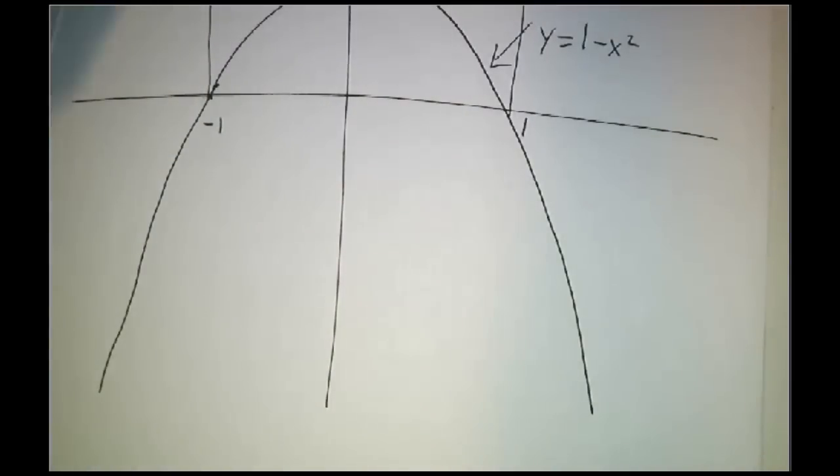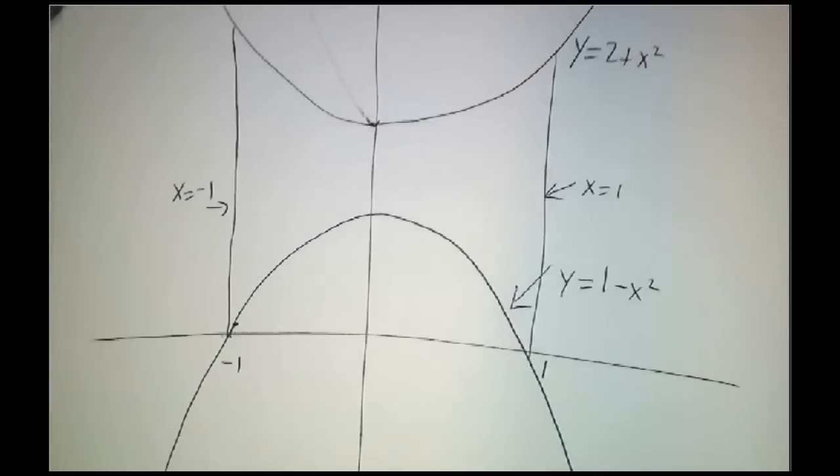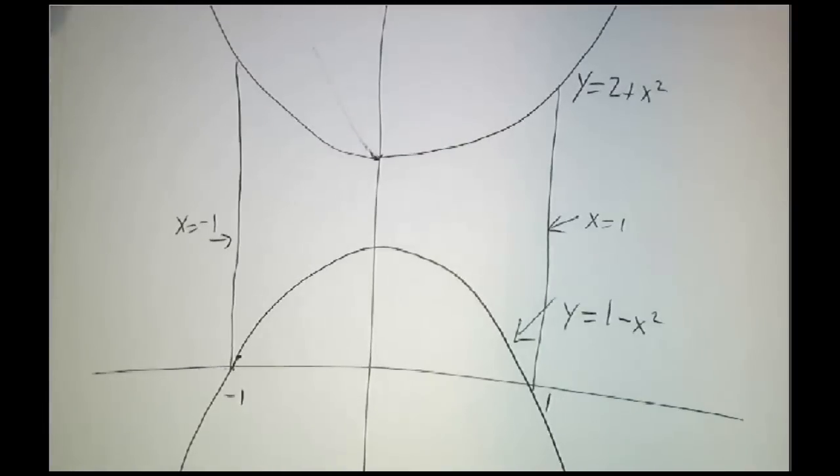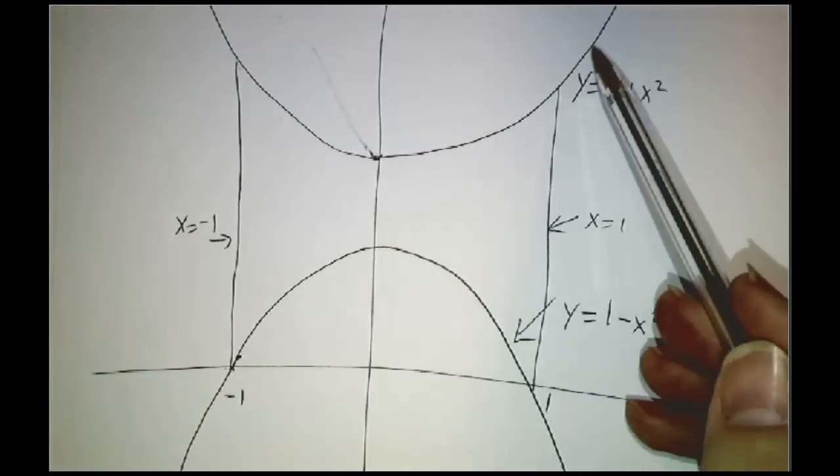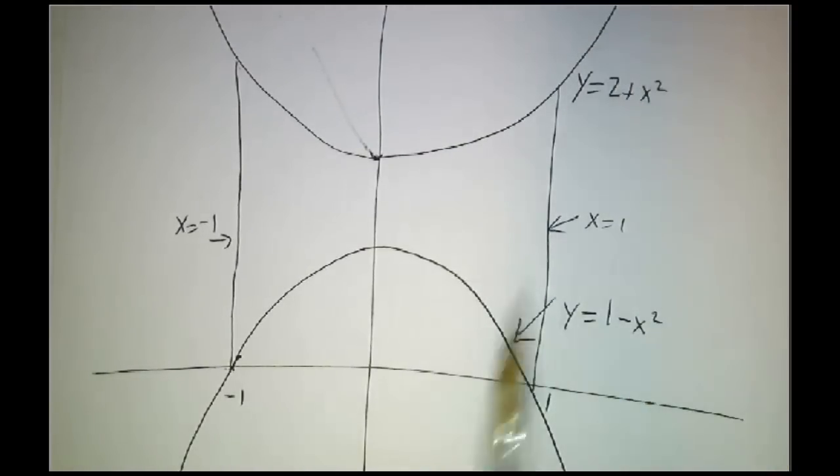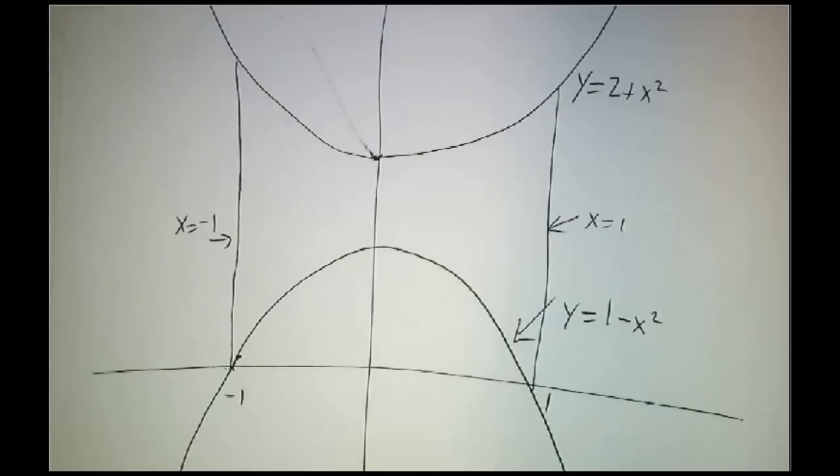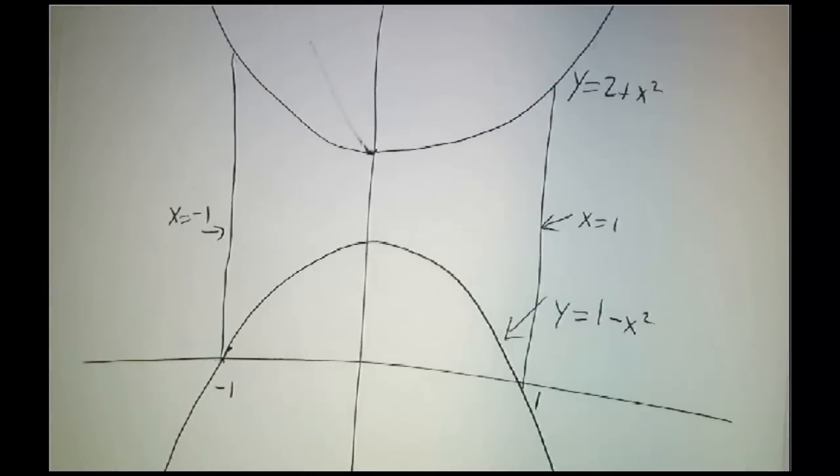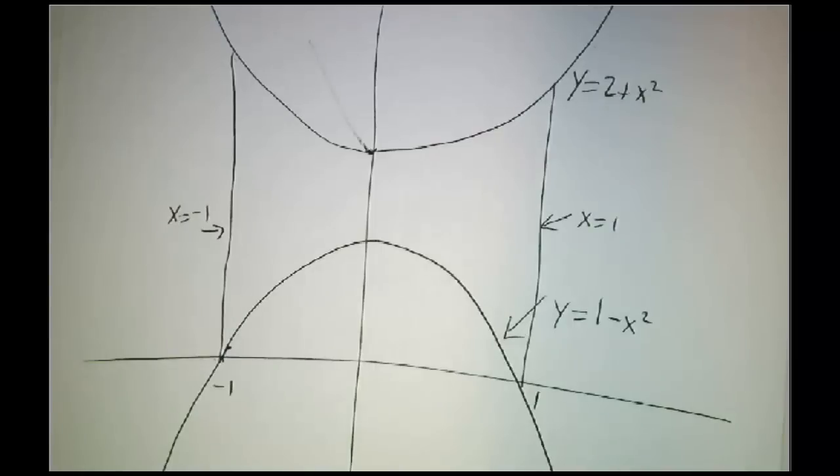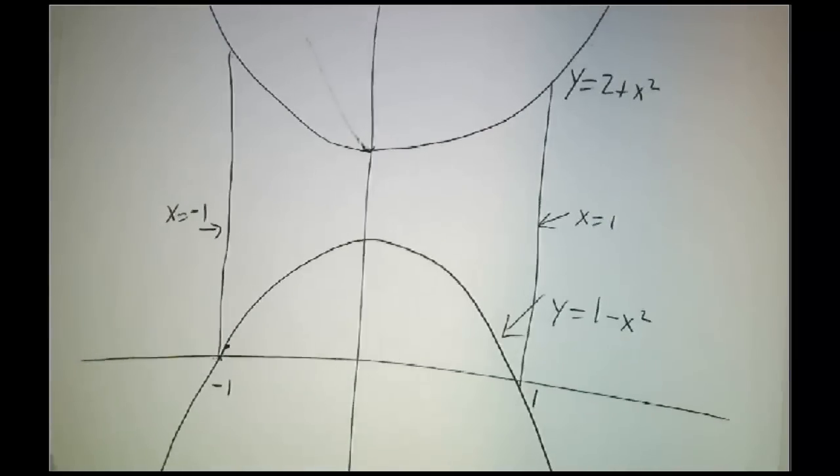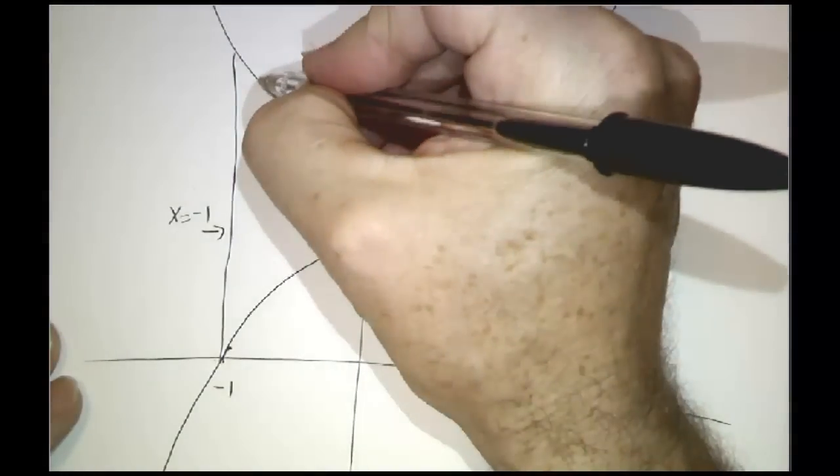So as an example, let's look at the region between the parabola y equals 2 plus x squared and the parabola y equals 1 minus x squared, and the line x equals minus 1 and the line x equals plus 1. This is kind of like an hourglass only turned sideways. So what's the area of this region? Well, we don't have a formula for the area of an hourglass-shaped region. We can break things up into pieces.